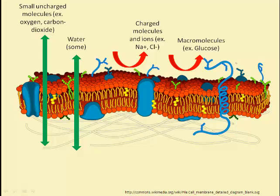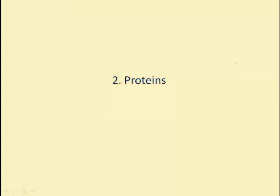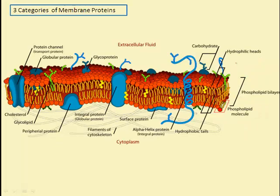Sodium, chloride, and glucose do pass across the cell membrane — they just don't pass through the phospholipid bilayer itself. Another feature of the cell membrane is the proteins embedded within it. There are three classes: peripheral proteins, integral unilateral proteins, and integral transmembrane proteins.